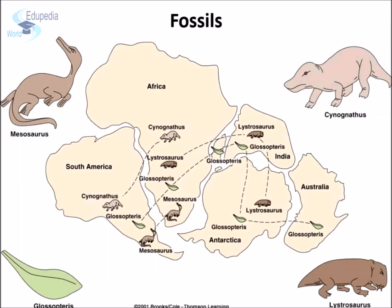Fossils. Wegener also found evidences from ancient fossils. He found fossils of the same species of extinct plants and animals in rocks of the same age, but on continents that are now widely separated. Wegener suggested that the continents could not have been in their current positions because the organisms would not have been able to travel across the oceans. For example, Mesosaurus fossils are found in South America and South Africa, but the reptile could only swim in fresh water.